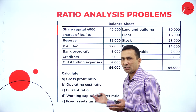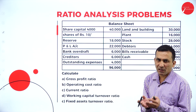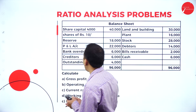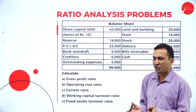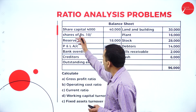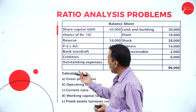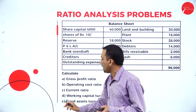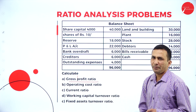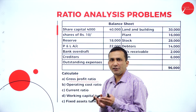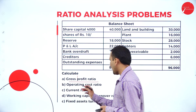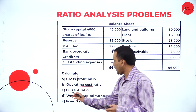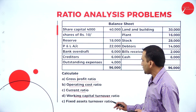As management, we use this for analysis to take proper planning and decisions. Using the trading and P&L account and balance sheet, we need to find the gross profit ratio, operating cost ratio, current ratio, working capital ratio, and fixed asset turnover ratio.